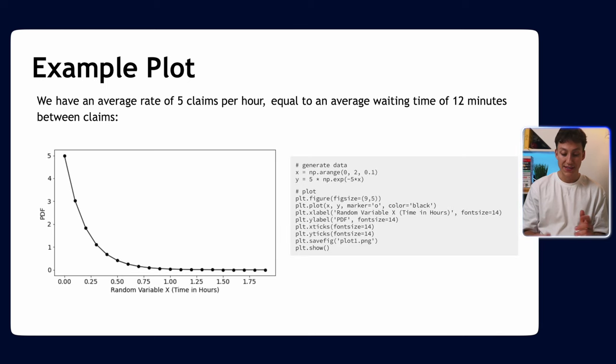This is what it looks like. Here I've generated a range of values of x—in this case x is hours, so zero to two hours. Y is the PMF, so remember we had five times np.exp, which is the exponential function of minus five times x. This is just the formula we had. I've added it into this code and plotted the results.